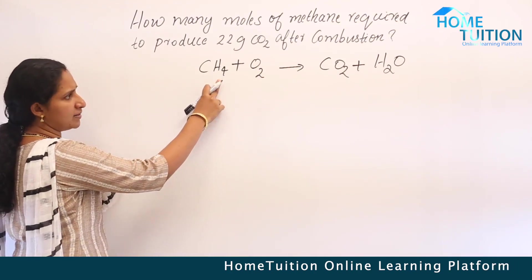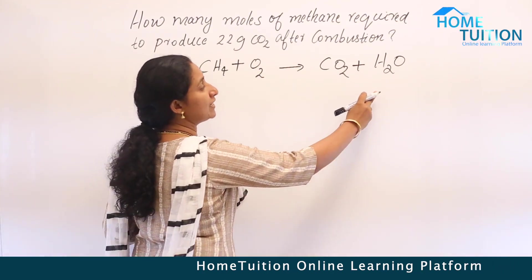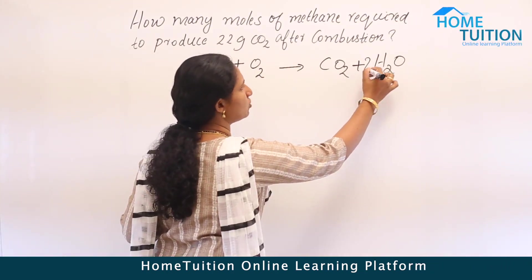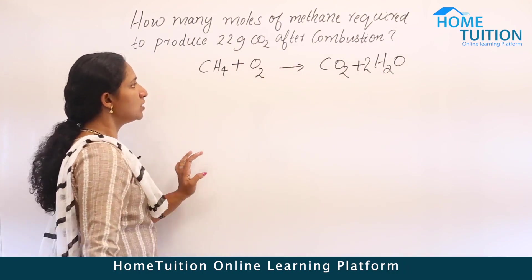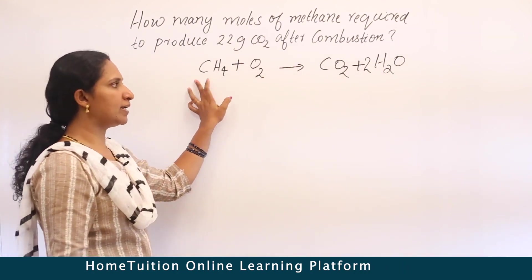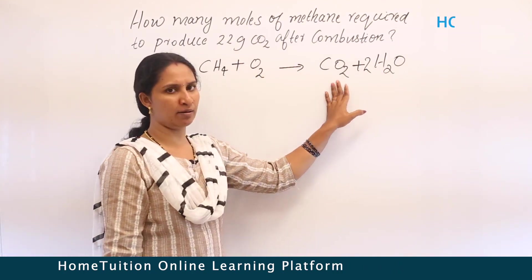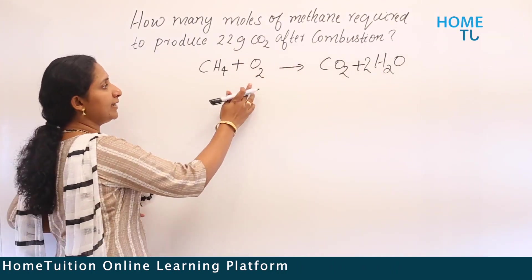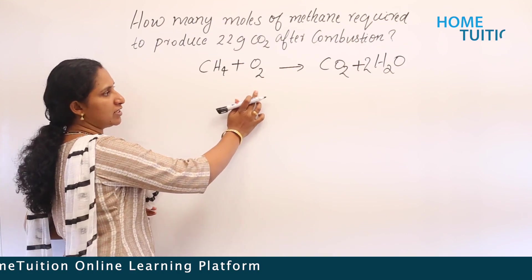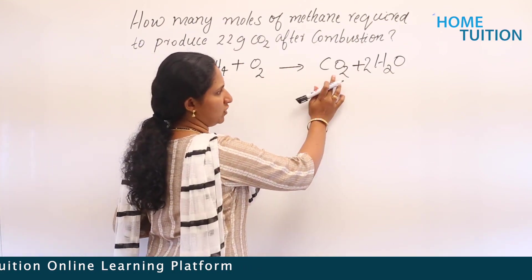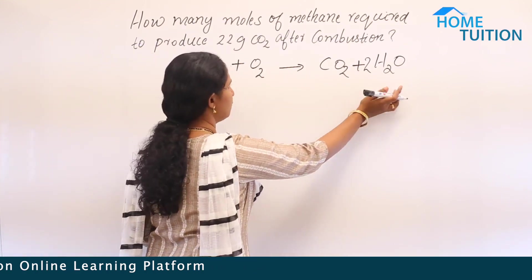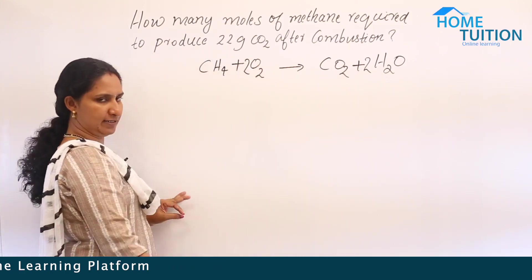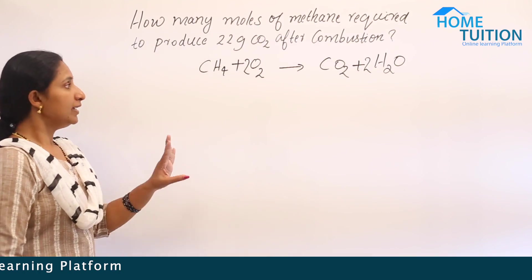There are four hydrogen atoms on the left but only two on the right, so put a coefficient of 2 before H2O. Carbon is balanced: one on each side. Then oxygen: two on the left, four on the right — so put 2 before O2.